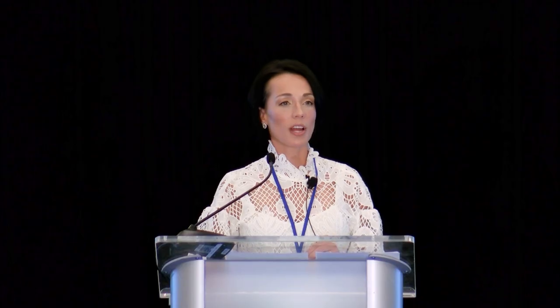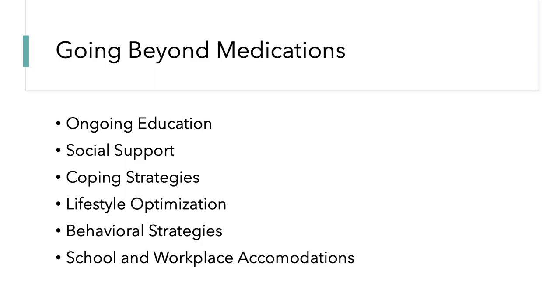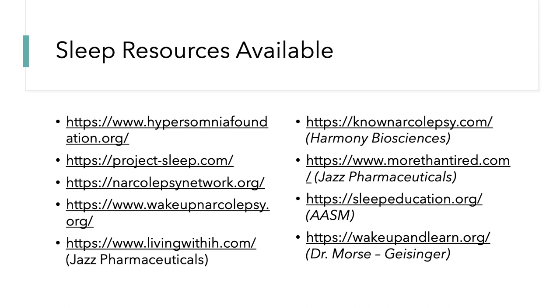Social support and coping strategies are key. Julie Flygar from Project Sleep has drilled into me how critically important social support is. It's not just family and friends — it's also peer support from others with the same condition, because peer mentorship has been proven to be one of the most effective strategies for managing a variety of illnesses. Lifestyle optimization, behavioral strategies, and school and workplace accommodations combined are critical to a much more productive lifestyle.